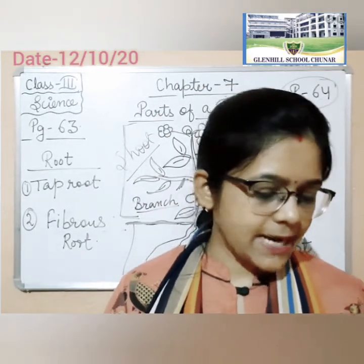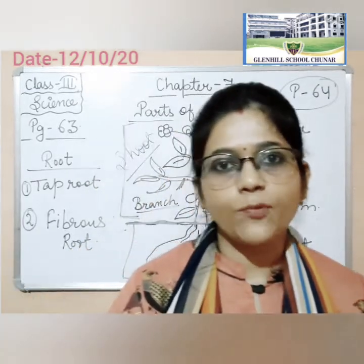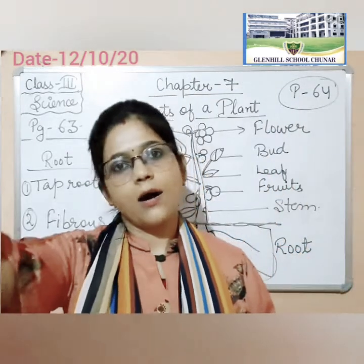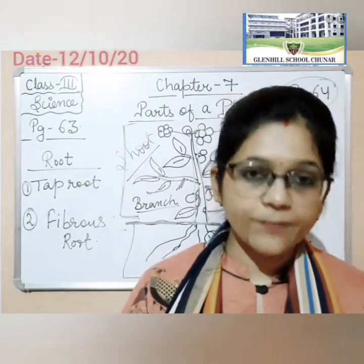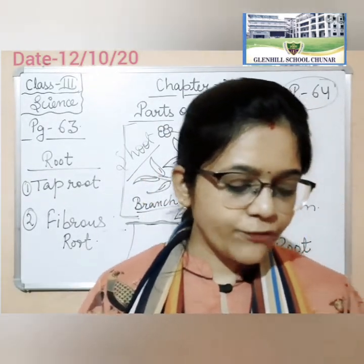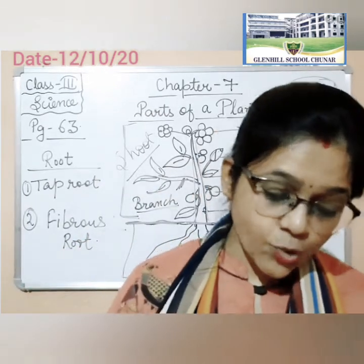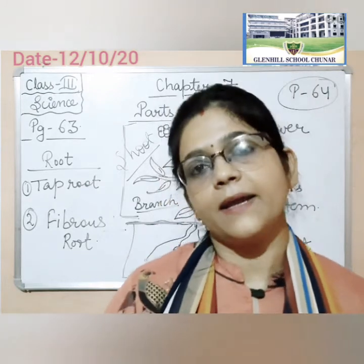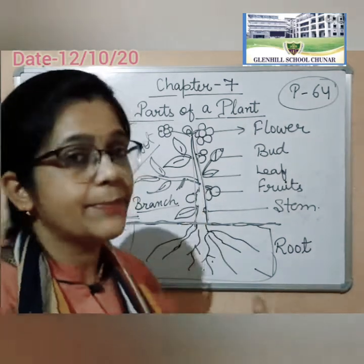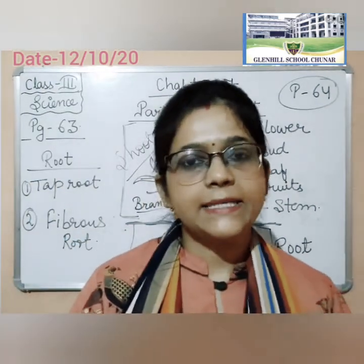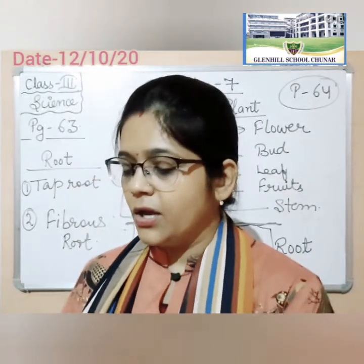Function of the stem: the stem supports the upper parts of the plant and keeps it upright. It carries water and minerals from the roots to the other parts of the plant. It transports food made in the leaves to other parts. Some stems like sugarcane, potatoes and ginger store food — these stems can be eaten by us.